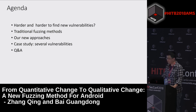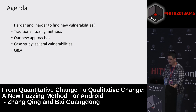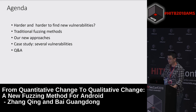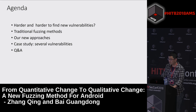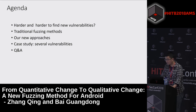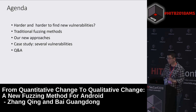Here is the agenda. First, as we all know, it's harder and harder to find new vulnerabilities, and I will analyze the reason for this situation. Then I will summarize the traditional fuzzing methods and discuss their limitations. Afterward, I will introduce our new approach. Finally, I will show some vulnerabilities found by our new approach.